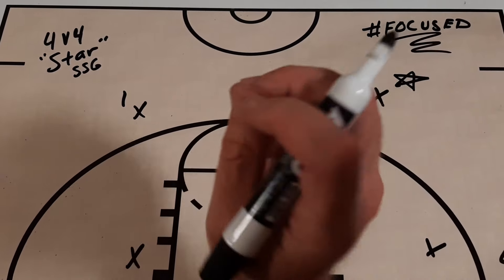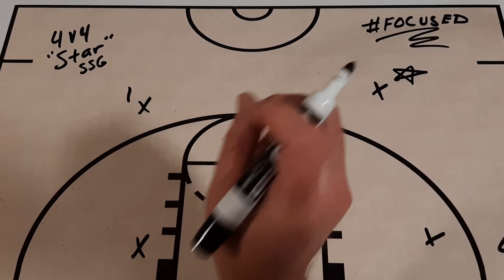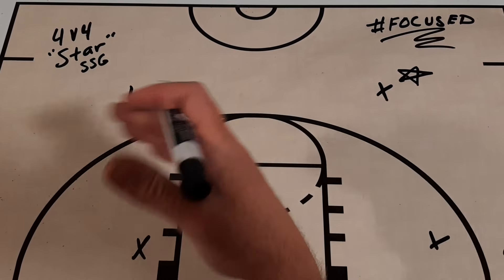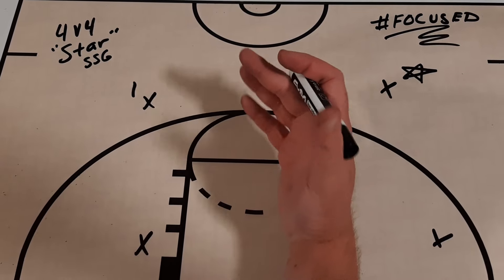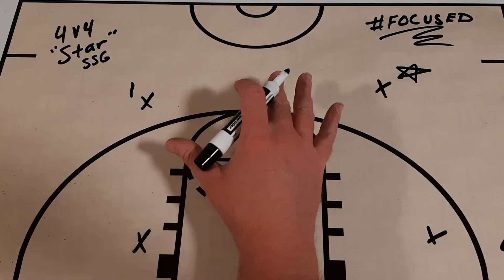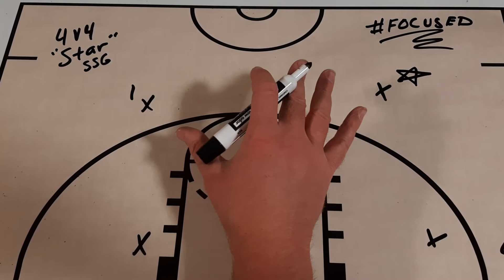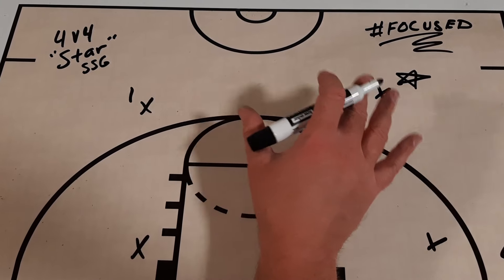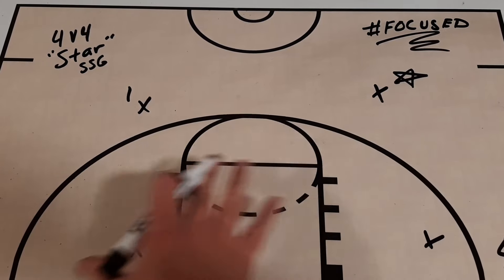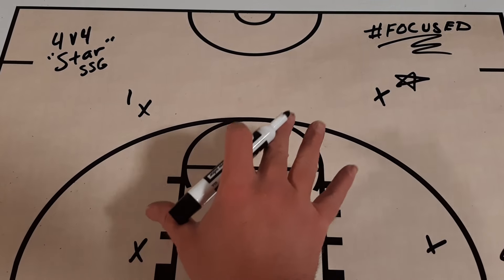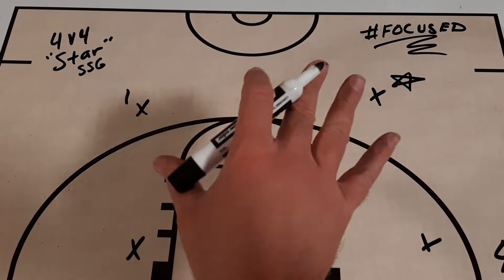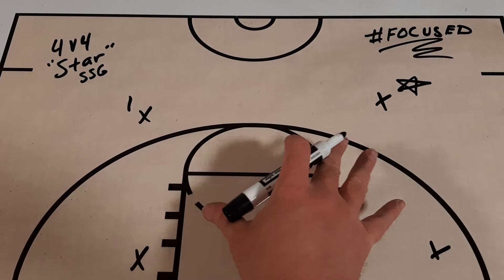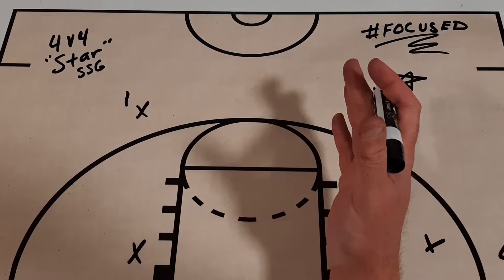In today's episode, I'm going to share with you a great small-sided game, or SSG, that we would use with our team against an opponent who had a really good shooter or really good star player. They might have had some other good contributing players, but they had this one player who really stood out. And we've all been in this position before.